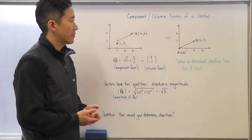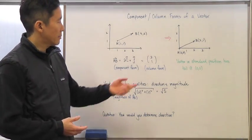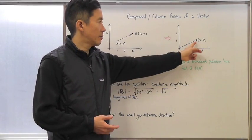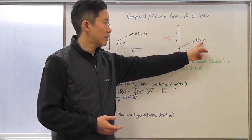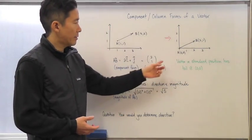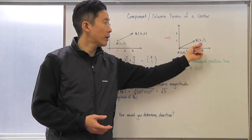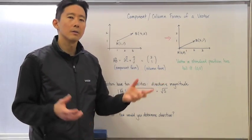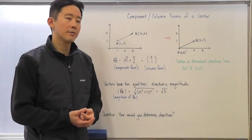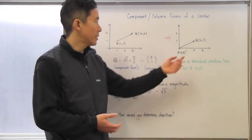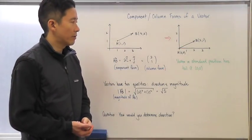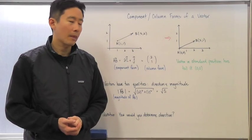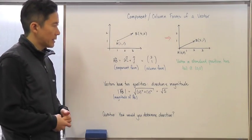The advantage of a vector in standard position is that if you start from (0,0) and go to B at (2,1), there is a clear relationship between the ending point (2,1) and the column form of the vector. It's very easy to find the column form as long as you have a vector in standard position.